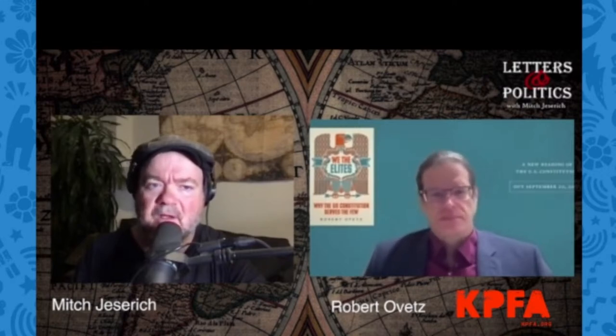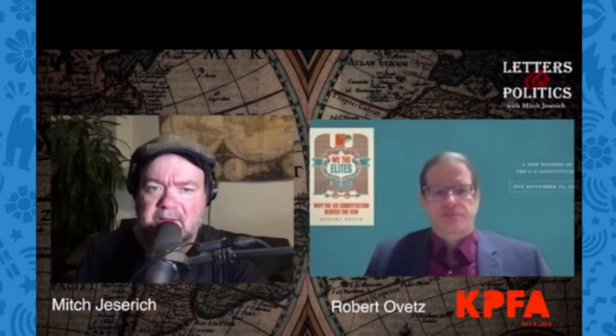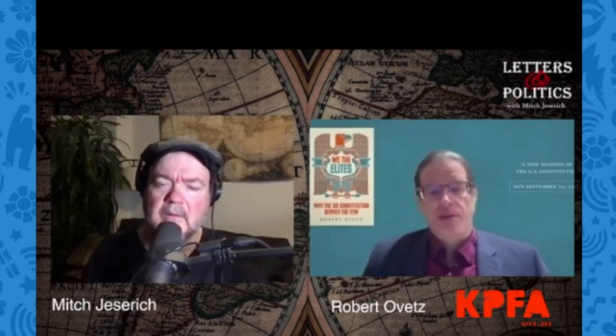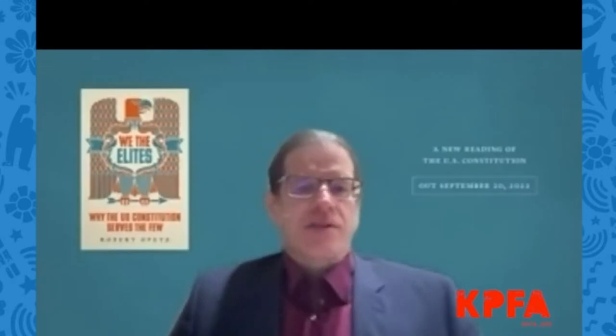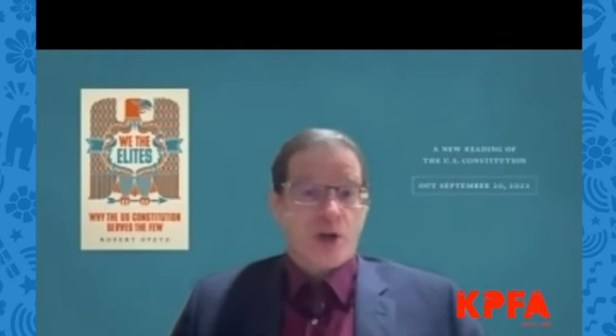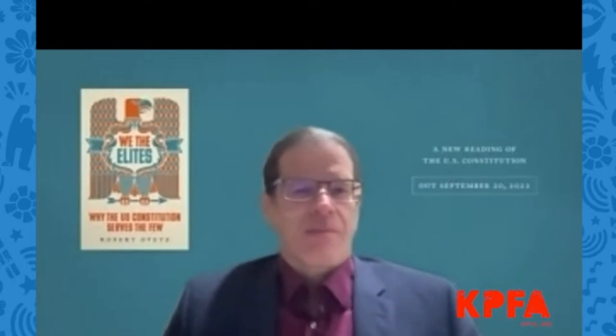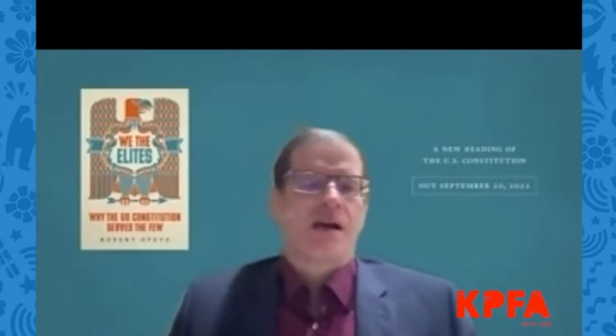Debt plays a huge role in the design of the Constitution in several different ways. The first is that most of the elites at the time were creditors, and many of them — this is a story we know well with Donald Trump today — were also debtors. They had borrowed money to invest and loaned money to others. During the American Revolution, Congress essentially was broke; it didn't have enough gold or silver to coin money, and there was a shortage.